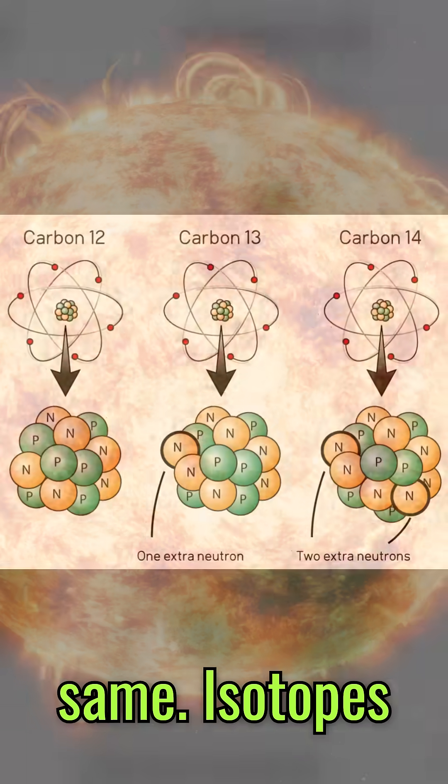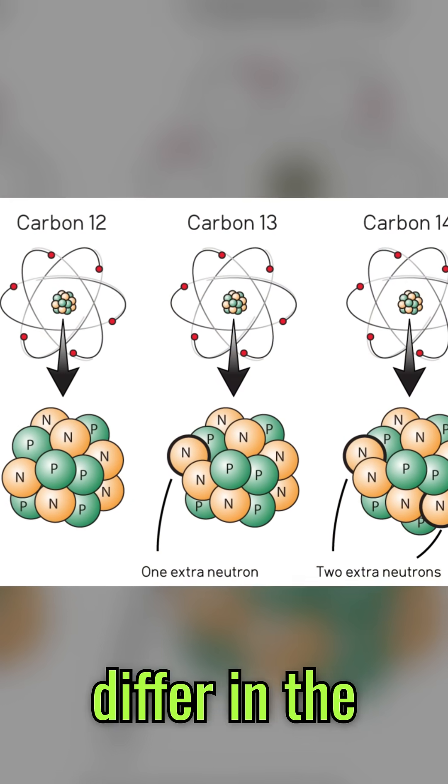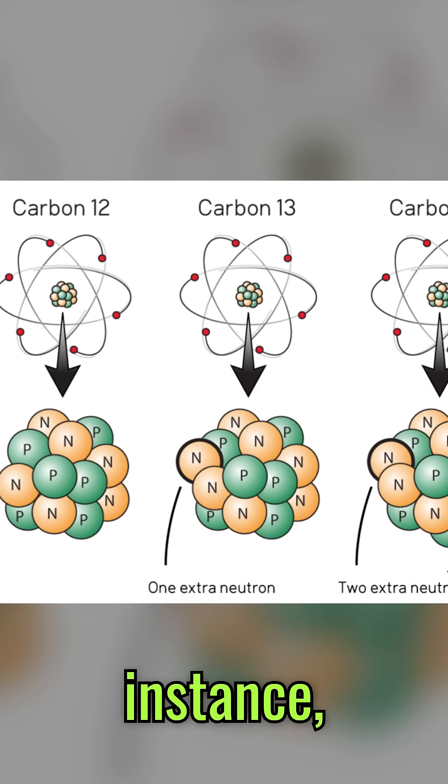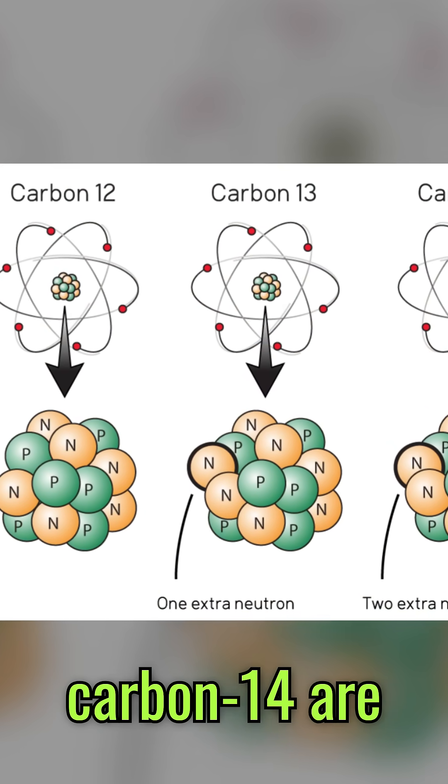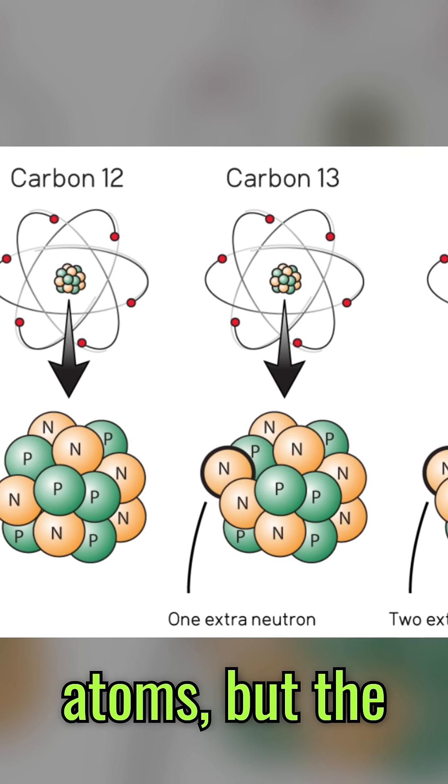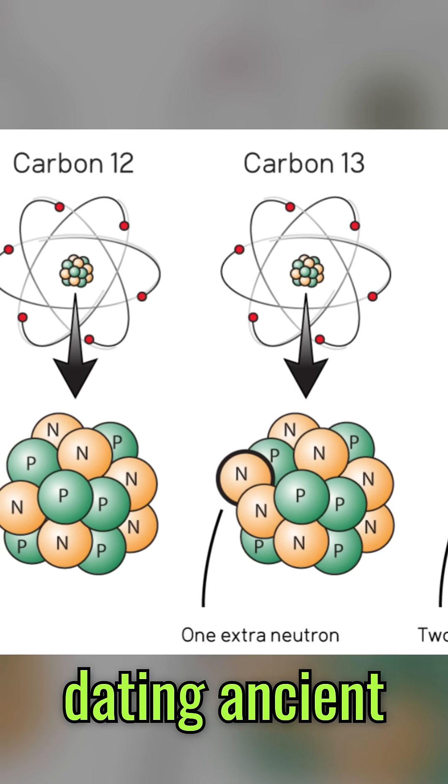Not all atoms are the same. Isotopes are atoms of the same element that differ in the number of neutrons. For instance, carbon-12 and carbon-14 are both carbon atoms, but the latter is radioactive and used for dating ancient artifacts.